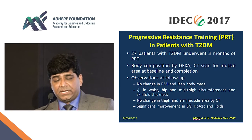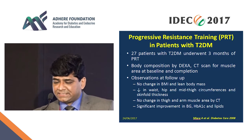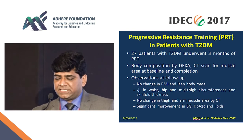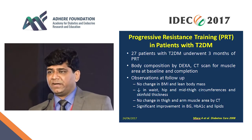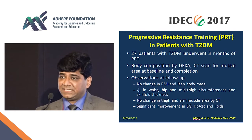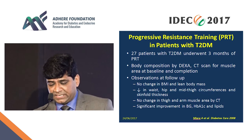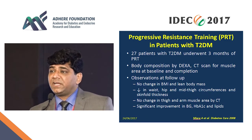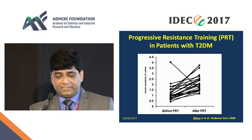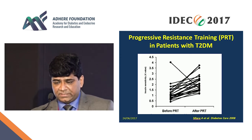Our experience with resistance training: a study performed about nine years ago included 27 patients with diabetes who underwent three months of progressive resistance training. Body composition was assessed by DEXA and CT scan for muscle area at baseline and follow-up. The main observation was no significant change in body mass index or total lean body mass over this short duration. However, there was a decrease in waist, hip, and mid-thigh circumferences and skinfold thickness, suggesting change in body fat distribution. There was significant improvement in blood glucose, HbA1c, and lipid profile, and insulin sensitivity improved across all patients.